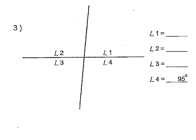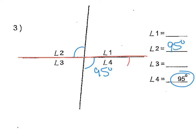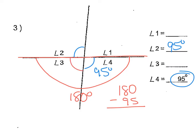Let's look at one more. Angle 4 is 95 degrees — it's a little bit bigger than 90, so that makes sense. Angle 4 is vertical to angle 2, so angle 2 is also 95 degrees because vertical angles are congruent. Angle 4 and angle 3 together make 180 degrees, so 180 minus 95 gives us 85 degrees for angle 3. And angle 3 is vertical to angle 1, so angle 1 is also 85 degrees.